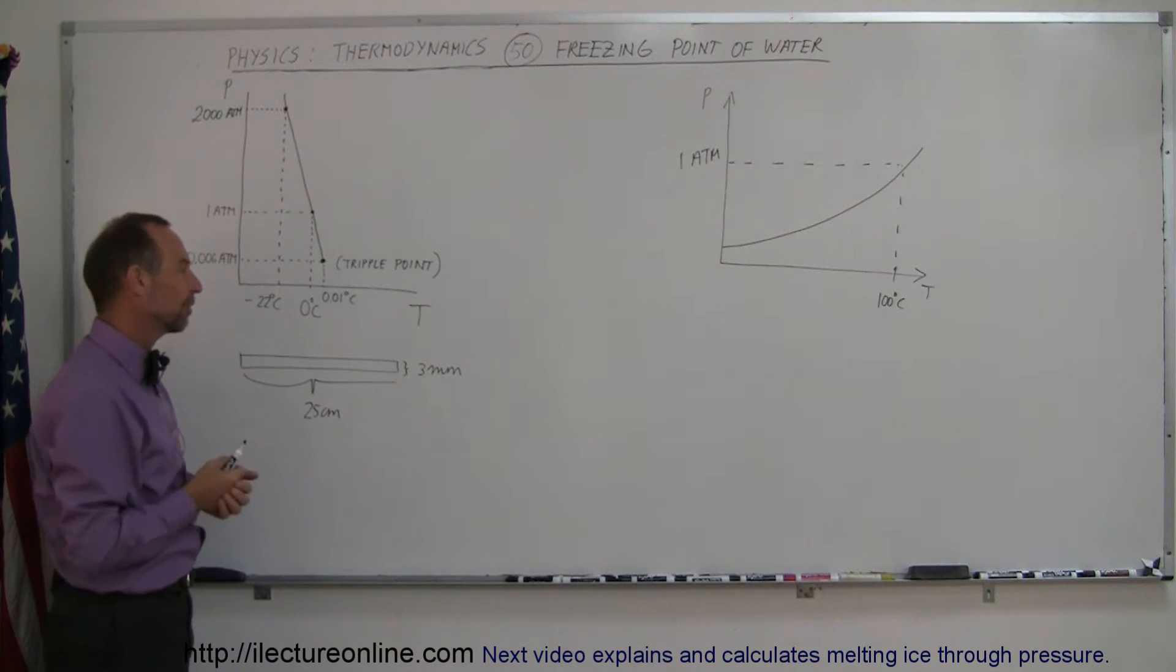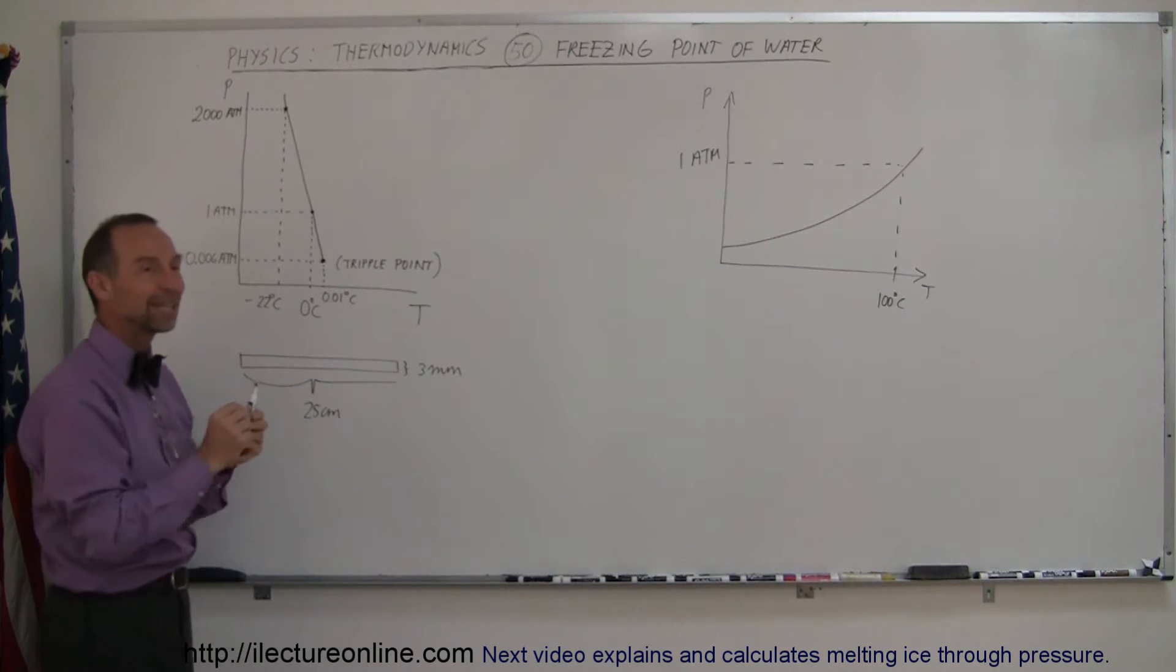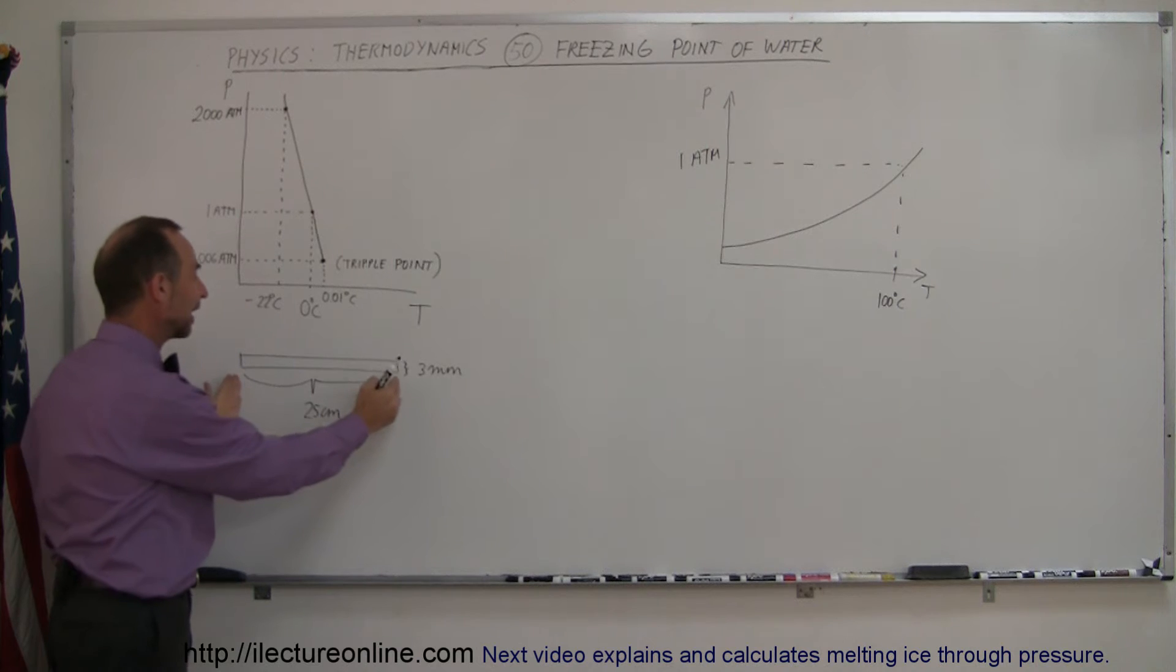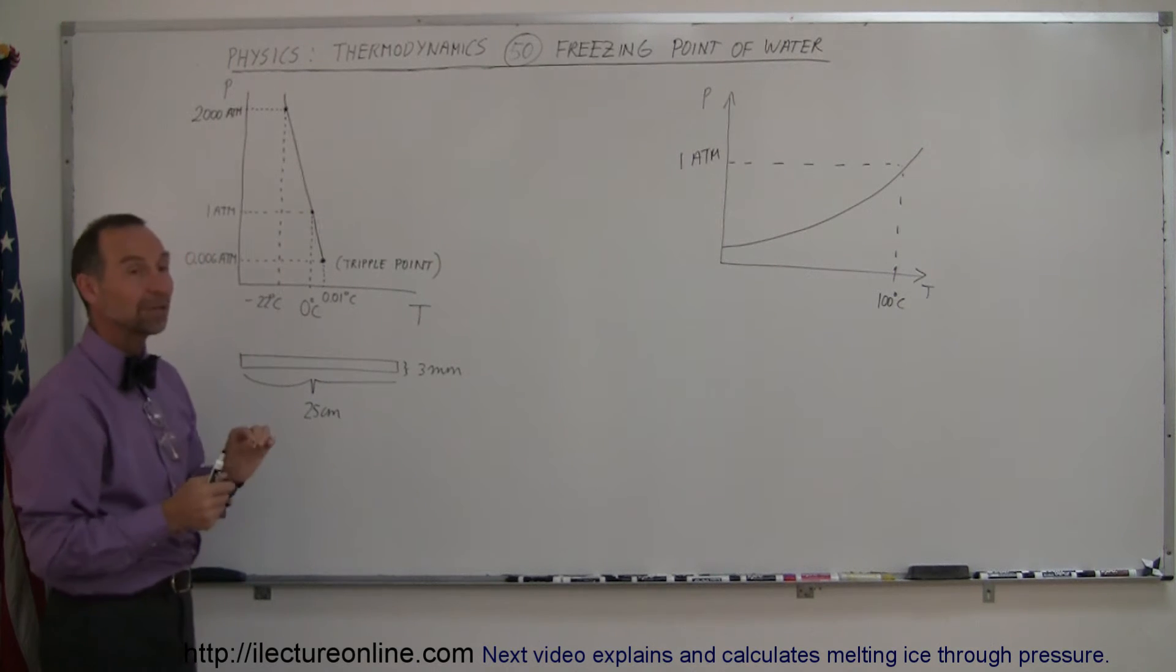And there's a practical aspect of that. So what I've drawn here is, you will of course not recognize as such, but this is the bottom of a blade of an ice skate. And let's say that the length of the blade is about 25 centimeters and the width of the blade is about 3 millimeters.